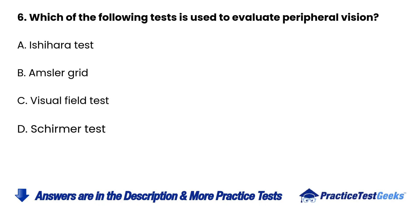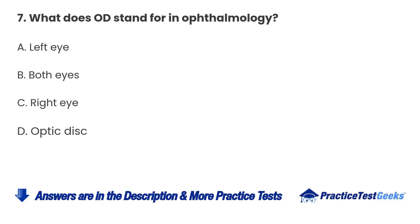6. Which of the following tests is used to evaluate peripheral vision? A. Ishihara test B. Amsler grid C. Visual field test D. Schirmer test